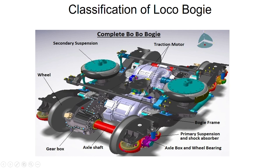This is the difference between the BB type and BoBo type. In BB type, one single motor is placed in between and the single motor drives the two wheel axle sets. But in BoBo type, individual motors drive the independent axles and hence the wheels.